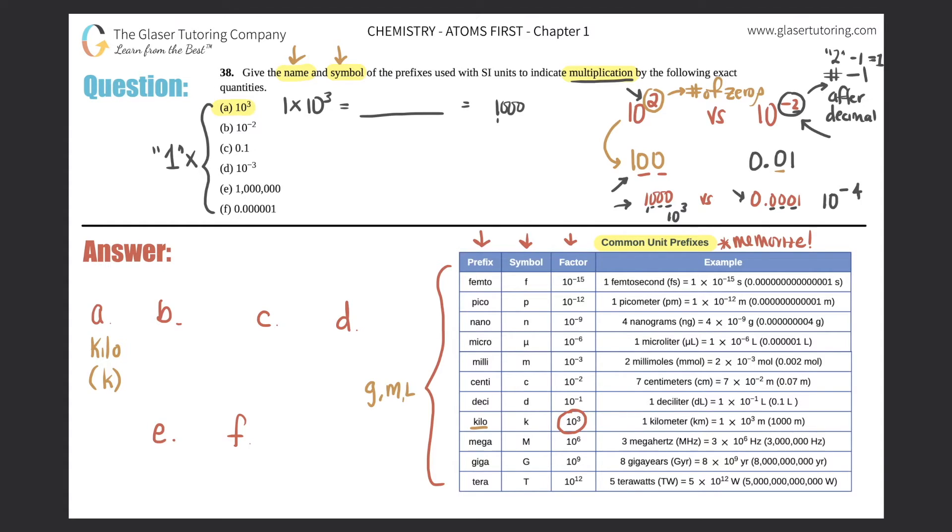Next one, 10 to the negative 2. So let's just, for practice sake, let's just try to put these into regular numbers. So this is a negative, which means that it would be 0.01, but we just need the name and the symbol. So 10 to the negative 2 is always represented by centi, C-E-N-T-I, and the symbol is a lowercase c.